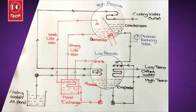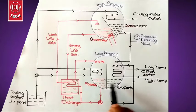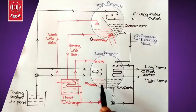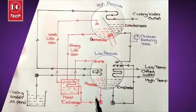Hello friends. In this video I am going to explain how the lithium bromide vapor absorption system works. In the lithium bromide vapor absorption system, water is used as the refrigerant and lithium bromide is used as the absorbent.